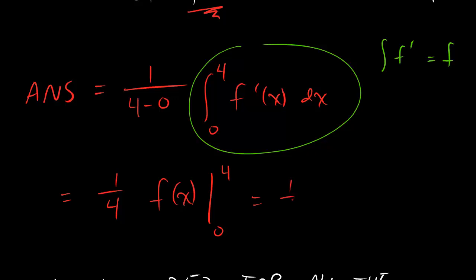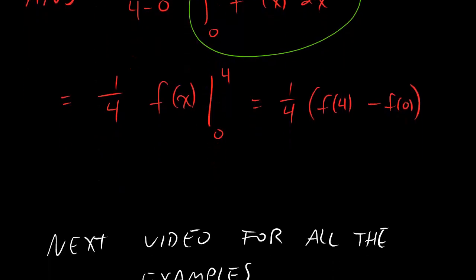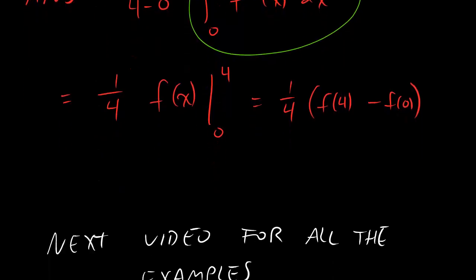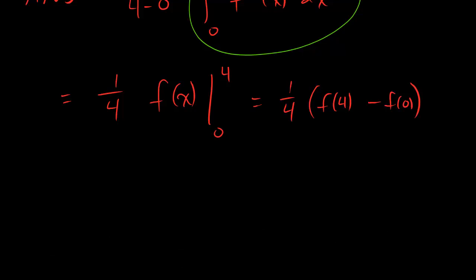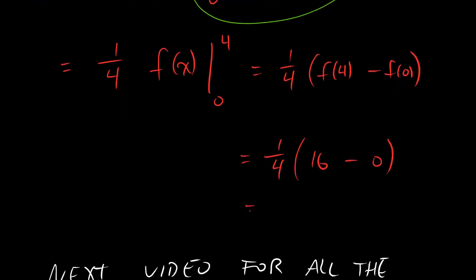So dudes, if I plug this in, I keep my 1 over 4, I get f of 4 minus f of 0. And let's make sure we know actually what that number should be. All of this without a calculator, may I add. What we're going to get is, remember the function is x squared. This is going to be 1 over 4. 4 squared is 16. 0 squared is 0. Subtract those puppies, and you get 16 over 4, which is 4 for your final answer.